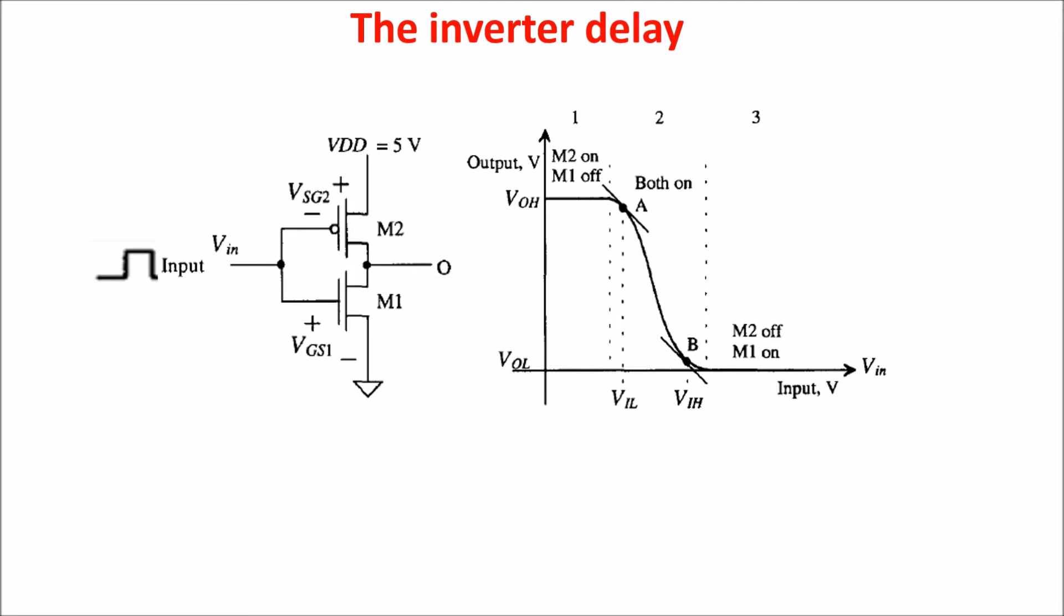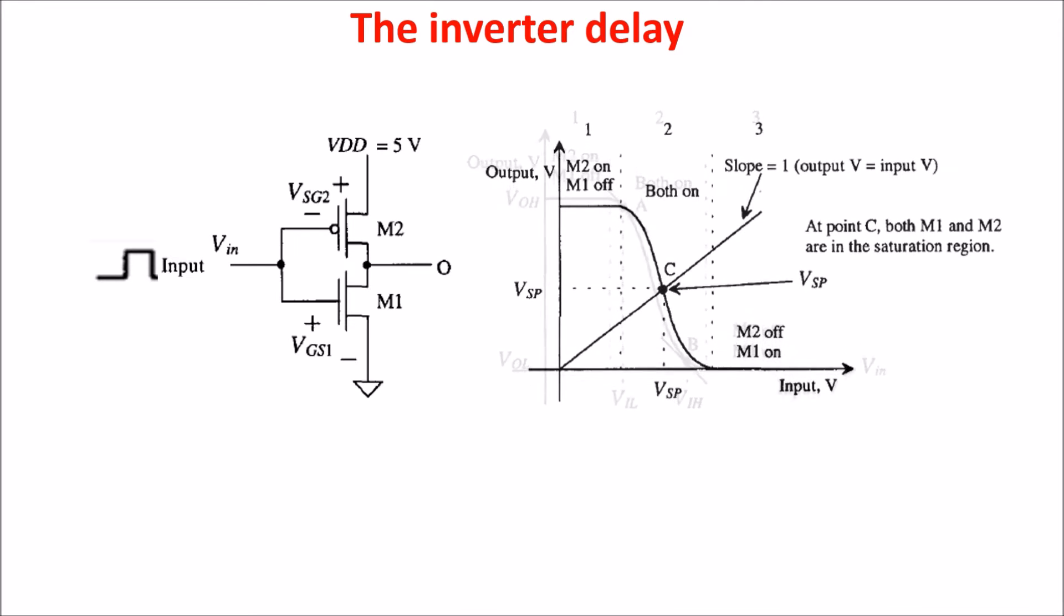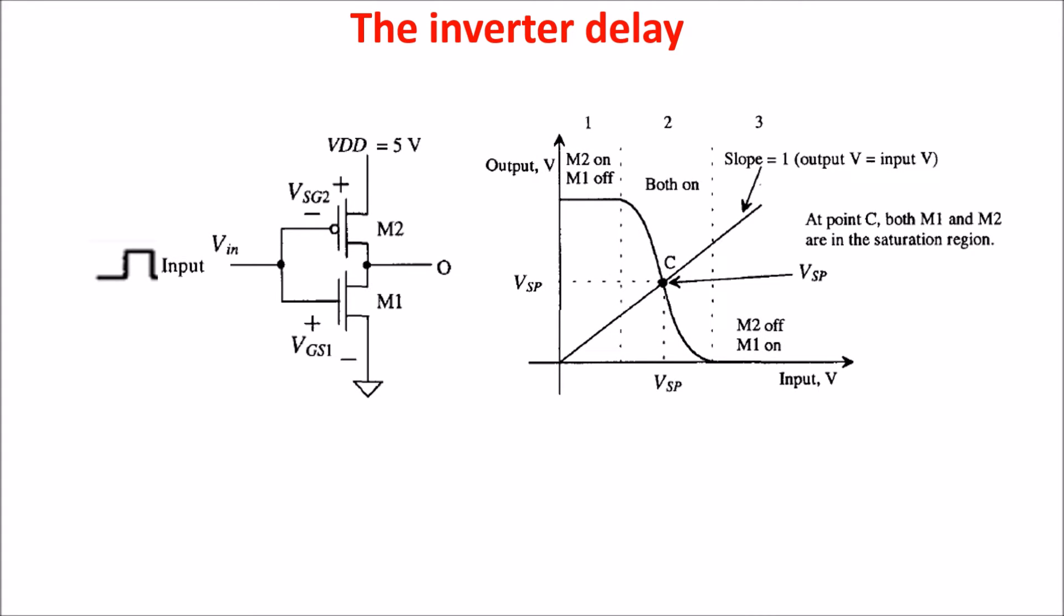In this diagram we see the output voltage as function of the input voltage. We see three regions. In the first and in the third we have one transistor ON and one OFF, but in the second region we have the transition of state and both transistors are in ON, in saturation mode. We can say that the switching point is when the voltage of the input is equal to the voltage of the output. We call it VSP and in our example is VDD/2, so 2.5V.